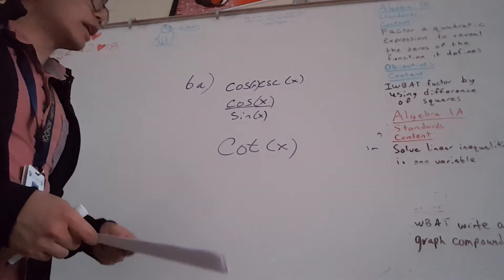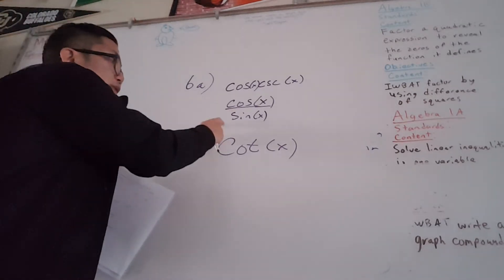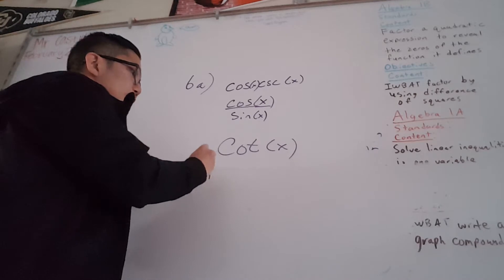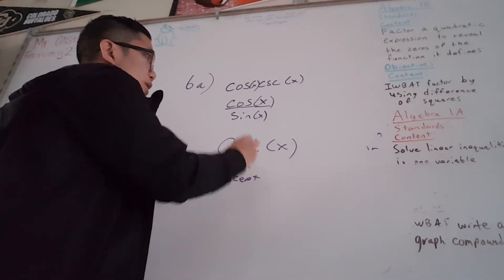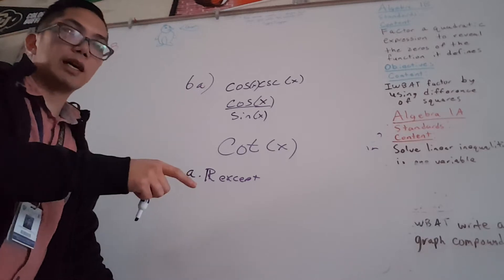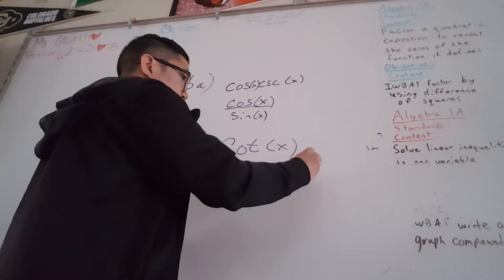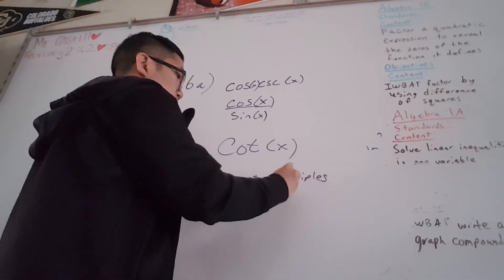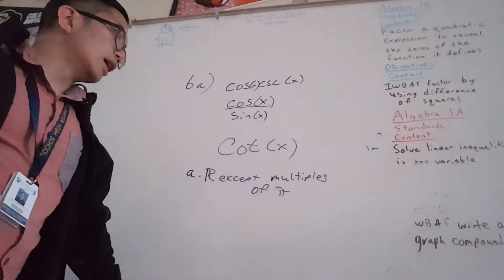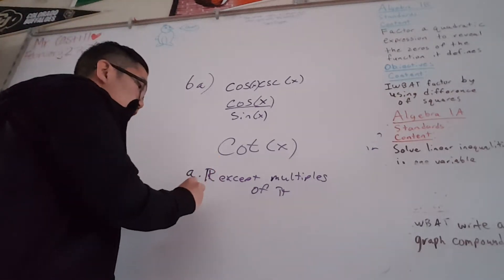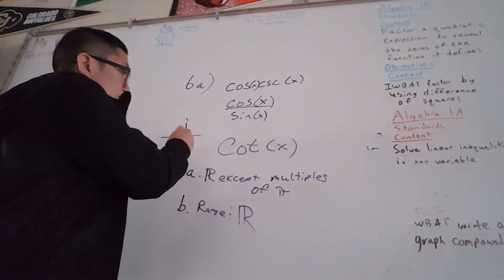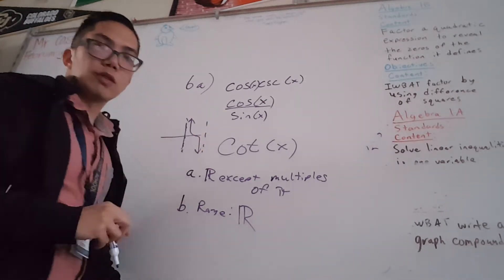Letter B is asking what is the domain and range. Remember, cotangent is really cosine over sine. So the domain for the cotangent graph is all real numbers except when sine is 0. Sine is 0 at 0, pi, 2pi, 3pi, 4pi — so except multiples of pi. This would be a good time to review your domain and range for all trig functions. Since it's cotangent, the range is all real numbers.